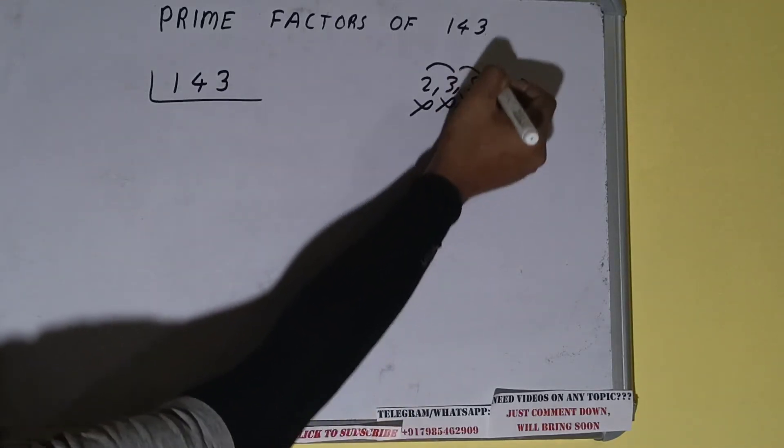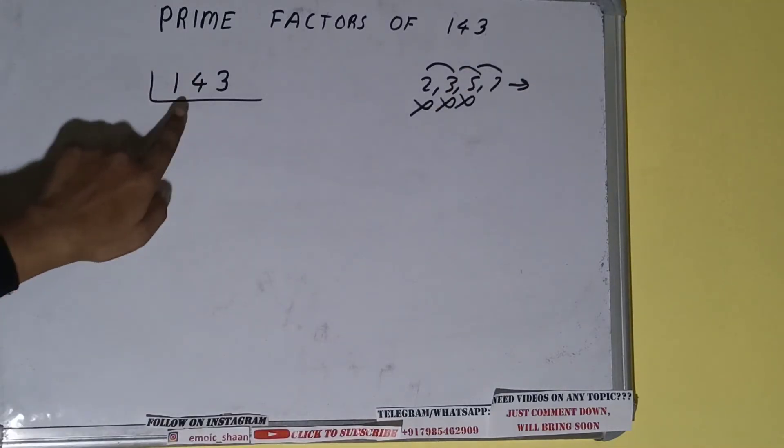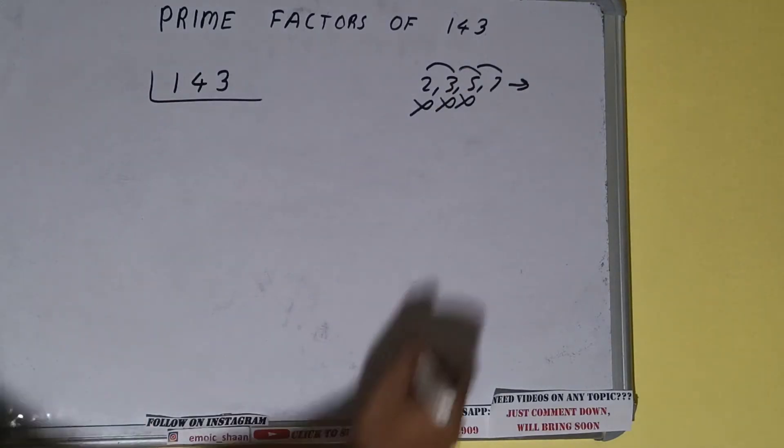So we'll be going to the next lowest one, that is 7. If we check, 7 times 14 is 98 with 3 left, not divisible by 7 also.